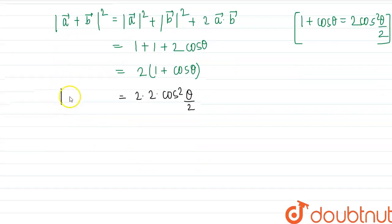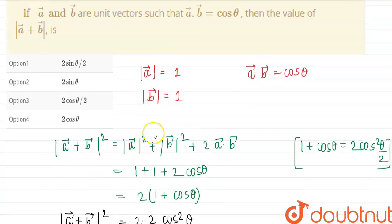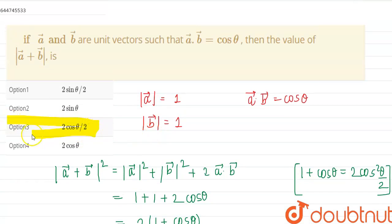theta by 2. And this is equal to mod of a plus b vector whole square. So mod of a plus b vector is equal to under root of this, that is 2 into 2 will be 2 cos theta by 2. So this is our required value. Now we can check our options, so option 3, 2 cos theta by 2